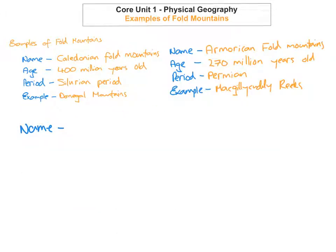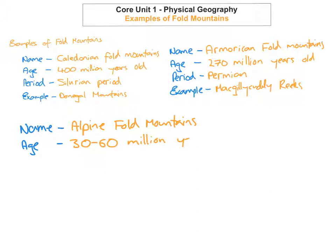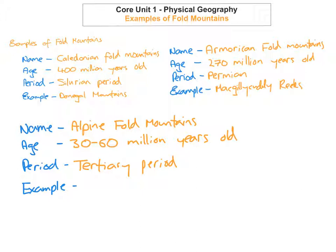The next example is the Alpine fold mountains, and these are the most recent fold mountains. These formed about 30 to 60 million years ago. The geological period was the Tertiary period. An example of the Alpine fold mountains would be the Himalayan mountains. You've also got the Andes and the Alps. There are no Alpine fold mountains in Ireland.